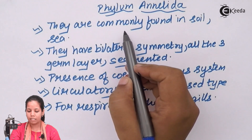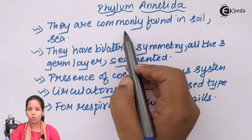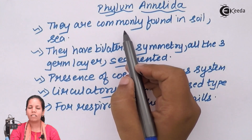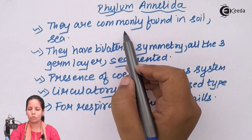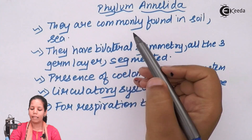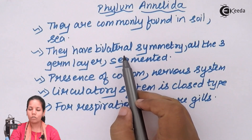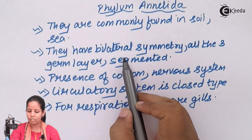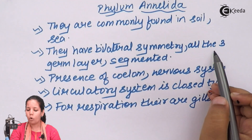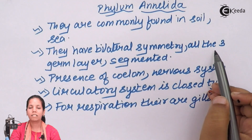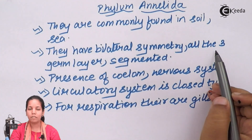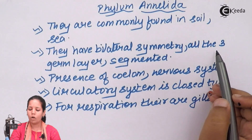Commonly they are found in soil regions or places where there is a little bit of moisture. They have bilateral symmetry just like human beings or cockroaches. Having all three germ layers — endoderm, ectoderm and mesoderm — makes them triploblastic in origin.